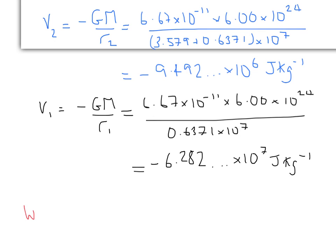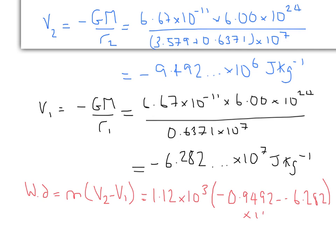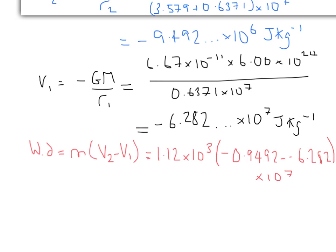So then, let's go back. So we're doing our work done. Remember, we were saying it was m times V2 minus V1, which we can see is 1.12 times 10 to the 3, and minus 0.945 times 10 to the 7, which gives you a work done of 5.97 times 10 to the power of 10 joules.